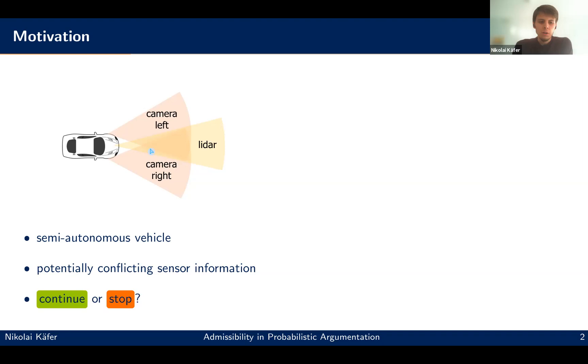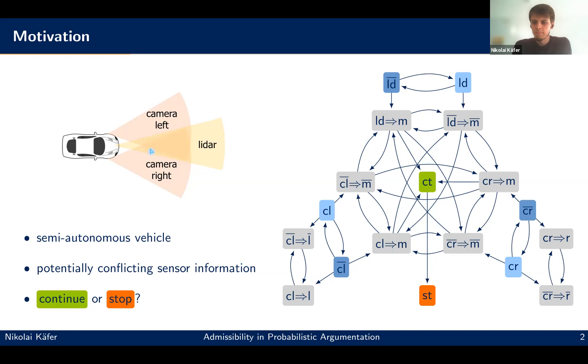And now, so we construct some argumentation framework from this information. I mean, there are any number of approaches to extract and build argumentation frameworks. So here, basically, we have an argument for continue, one for stop. So there's an attack here. We have arguments here for the sensors, the LIDAR, the camera right, the camera left. And this argument somehow says, we do detect this obstacle in front. And there's also a negated version, which then says, no, we do not detect an obstacle.